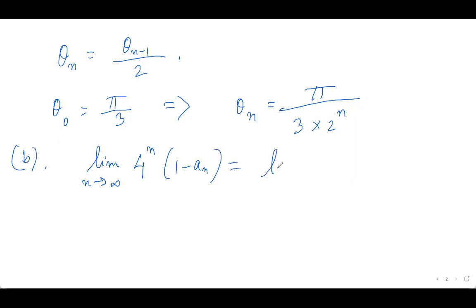And that is equals to limit n tends to infinity, 1 minus cos pi by 3 times 2 to the power n divided by 1 by 4 to the power n.